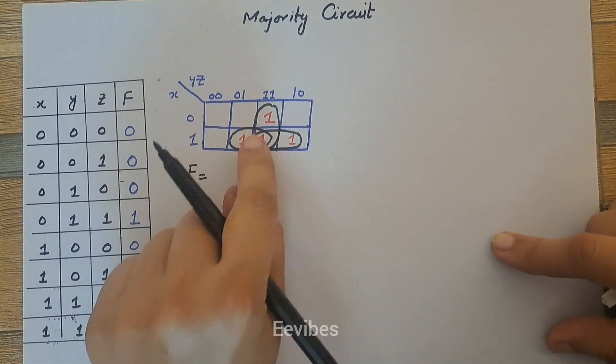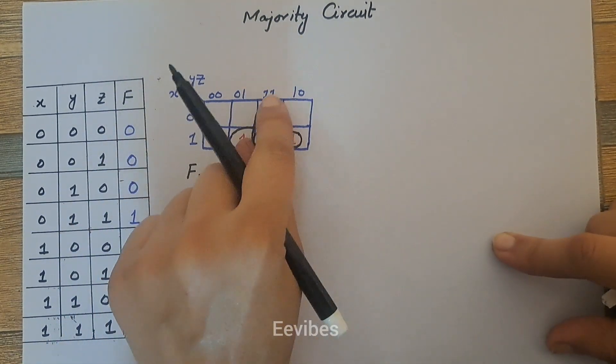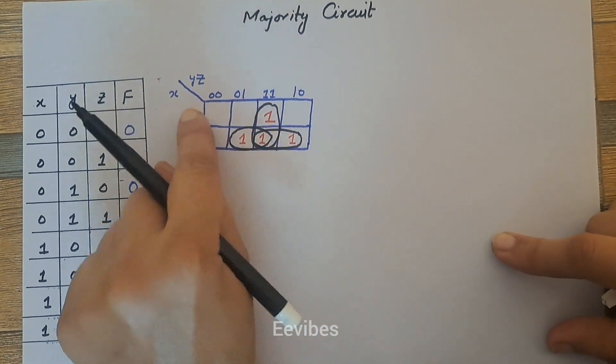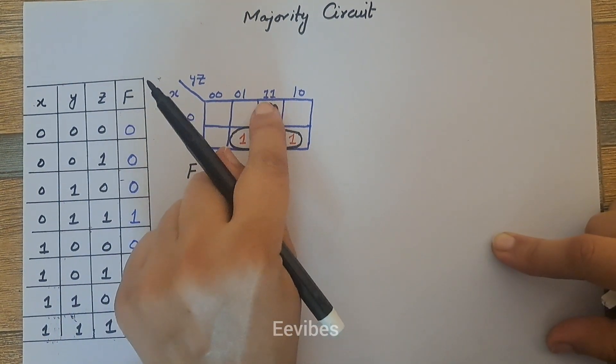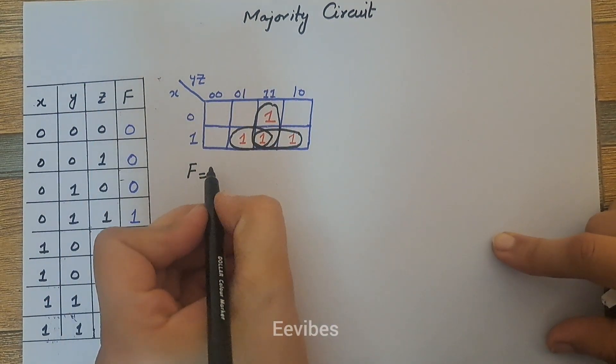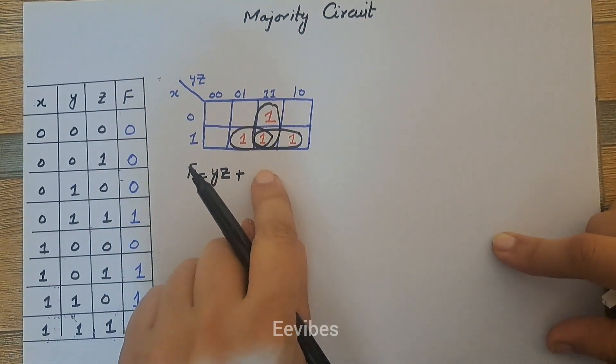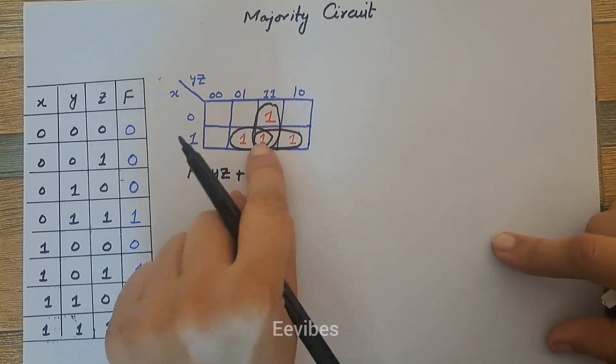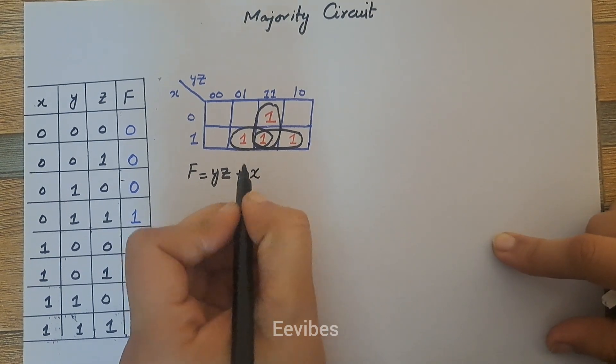Let's determine the expression for the output function f. First I will look at the vertical column. Here you can see x is varying from zero to one, so we will not write it, while y and z both are equal to one, so we will represent them as unprimed variables.